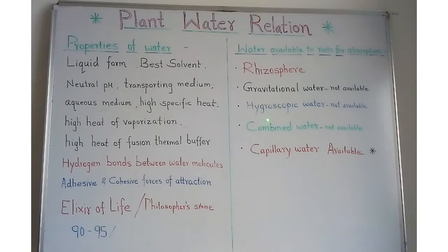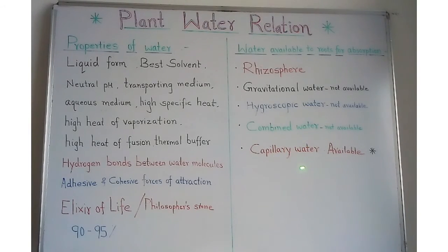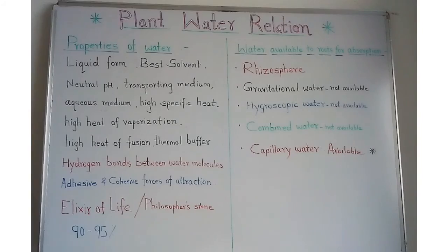Combined water is water present in the form of hydrated oxides of silicon, aluminium, etc. This is also not available to plants for absorption. Some amount of water is held in pores present between the soil particles due to capillarity, and this water is called capillary water. This is the only water which is available for absorption by the roots of the plant.